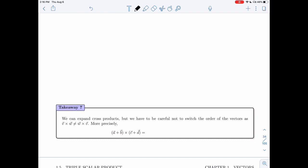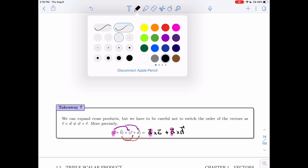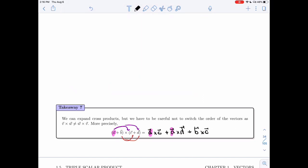So in takeaway seven, it says that we can expand cross product, but we have to be careful not to switch the order of the vectors as V cross W is not W cross V. So if you have something like this to expand, A plus B cross C plus D, when you expand, you have to make sure to leave A on the left. So here A was on the left, so it stays on the left. Same thing for B. B is on the left, so it stays on the left. And everything that's on the right stays on the right.